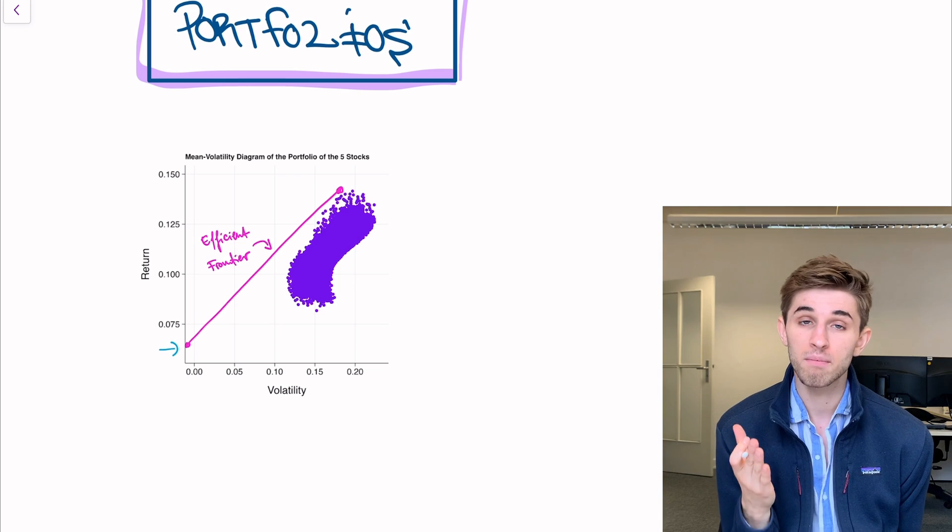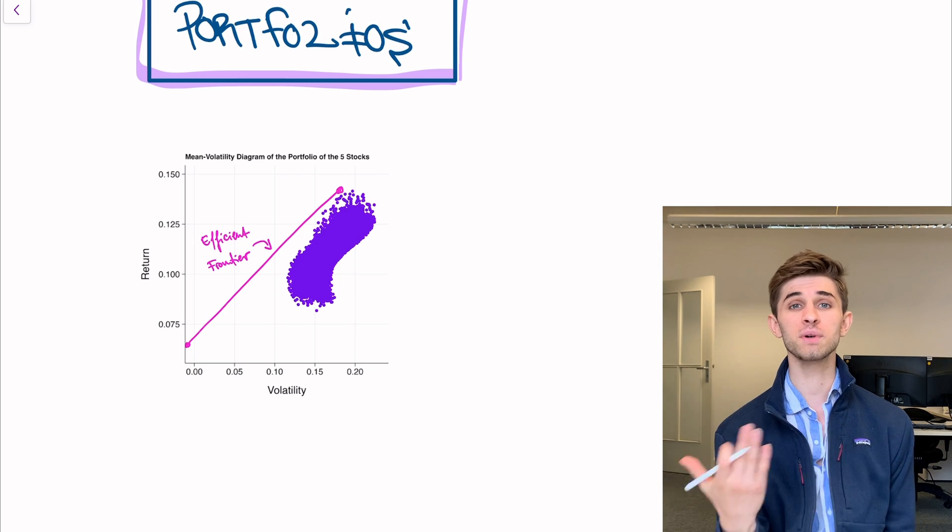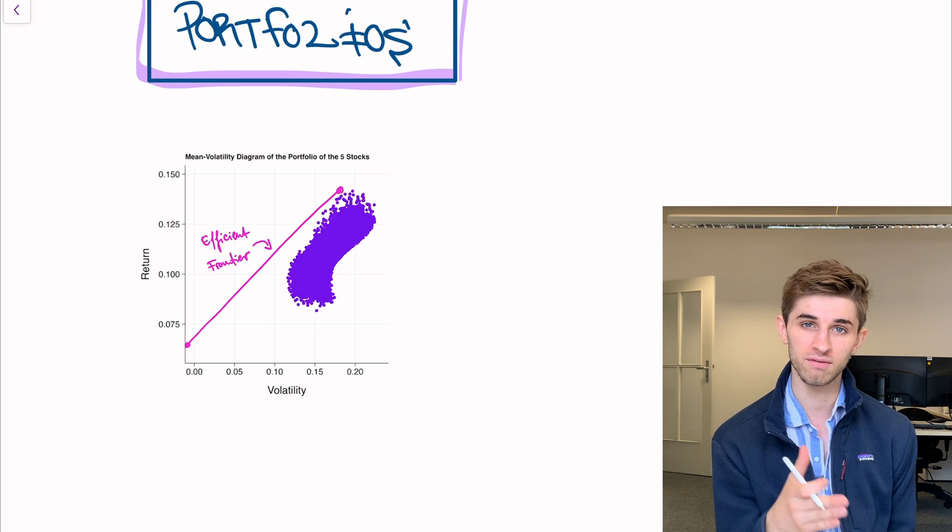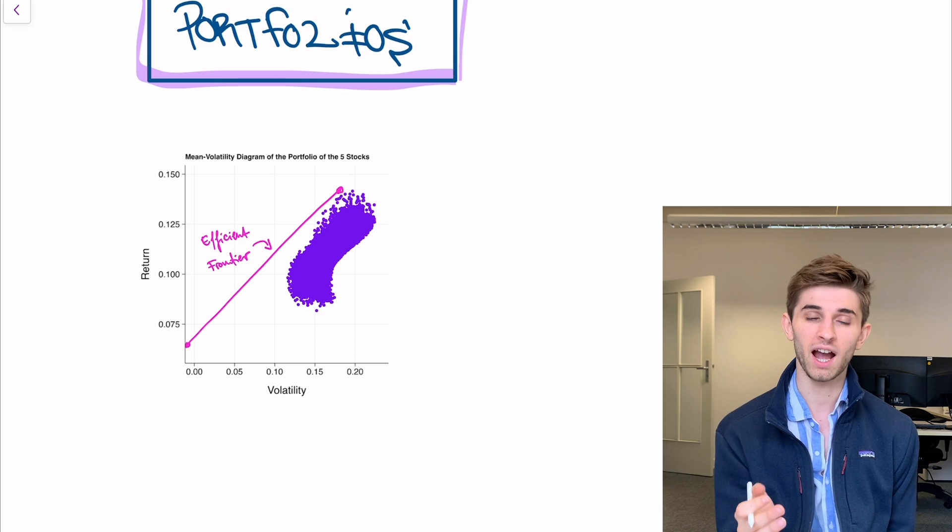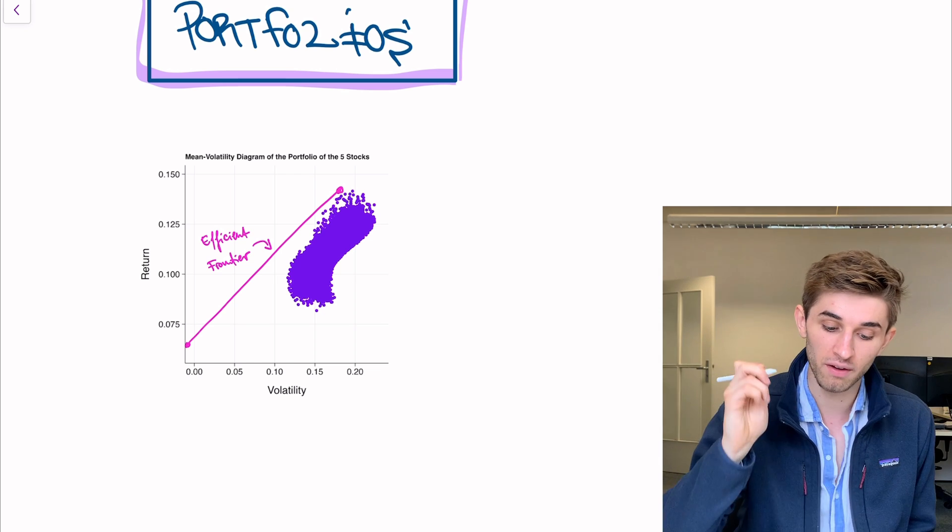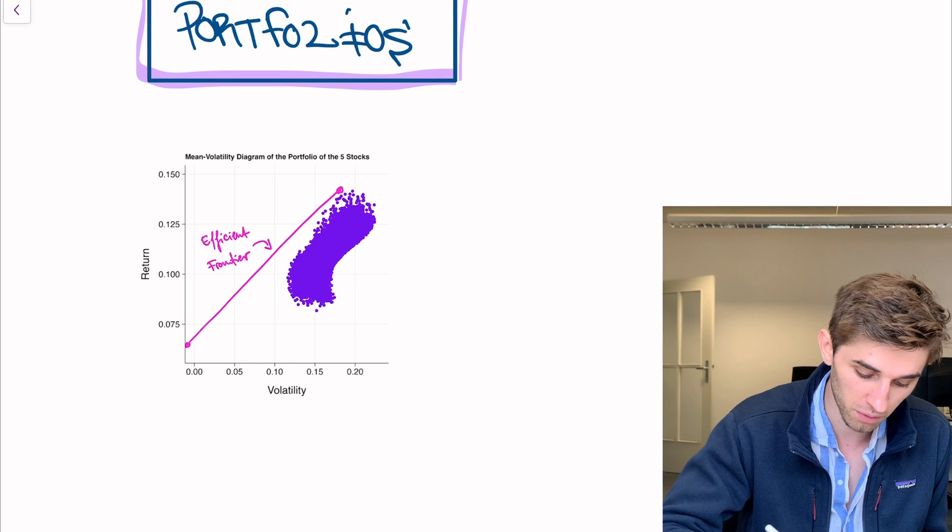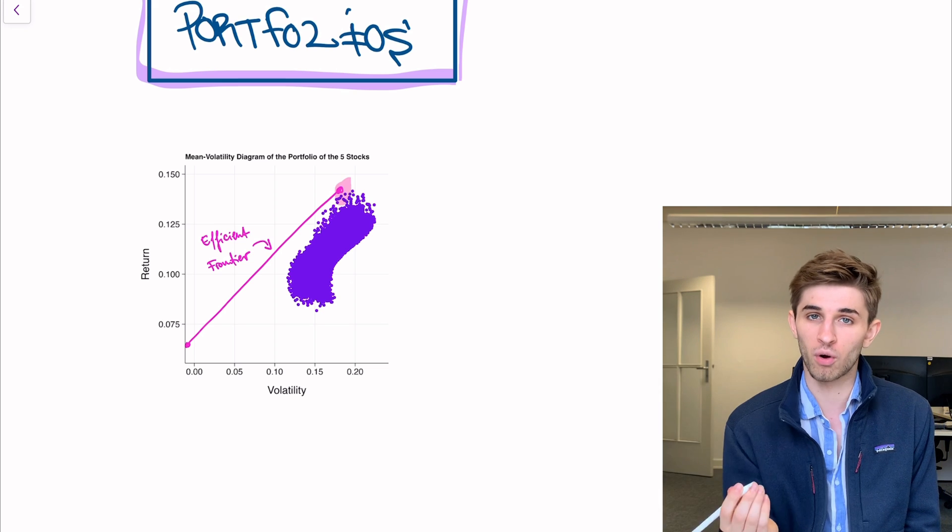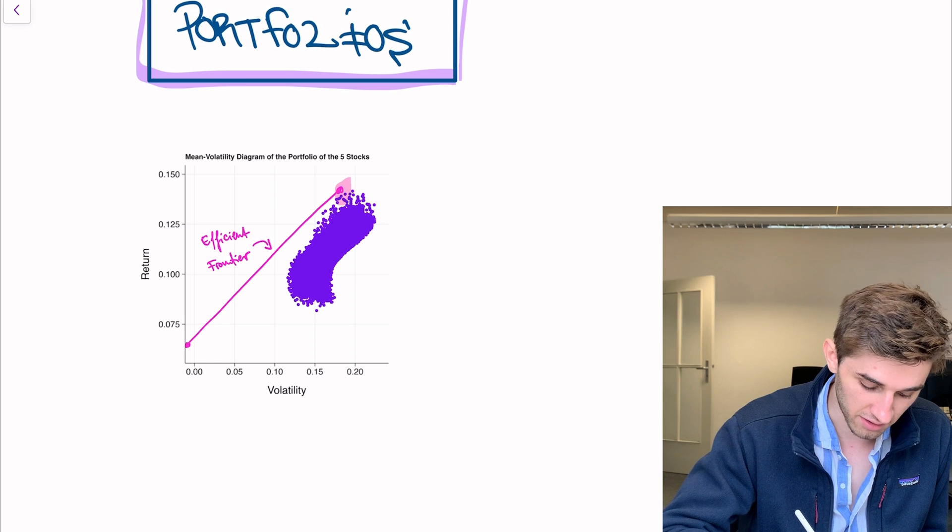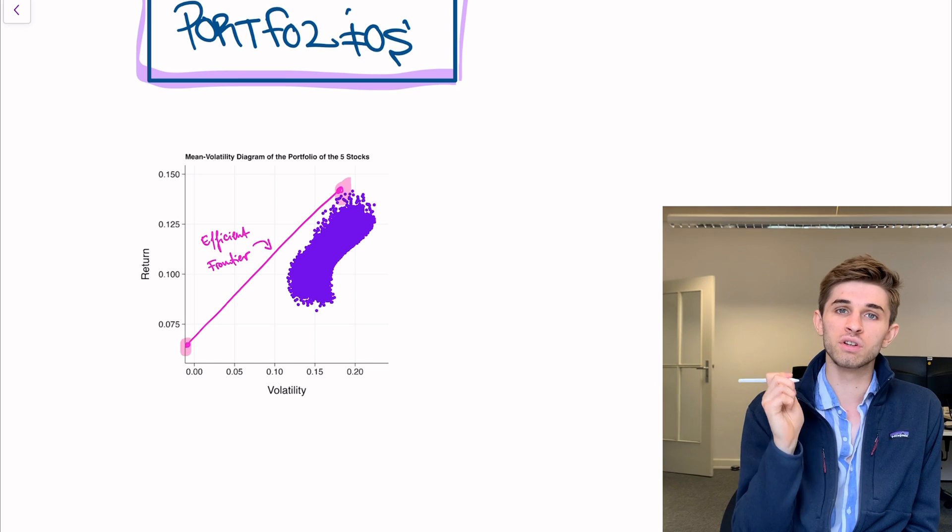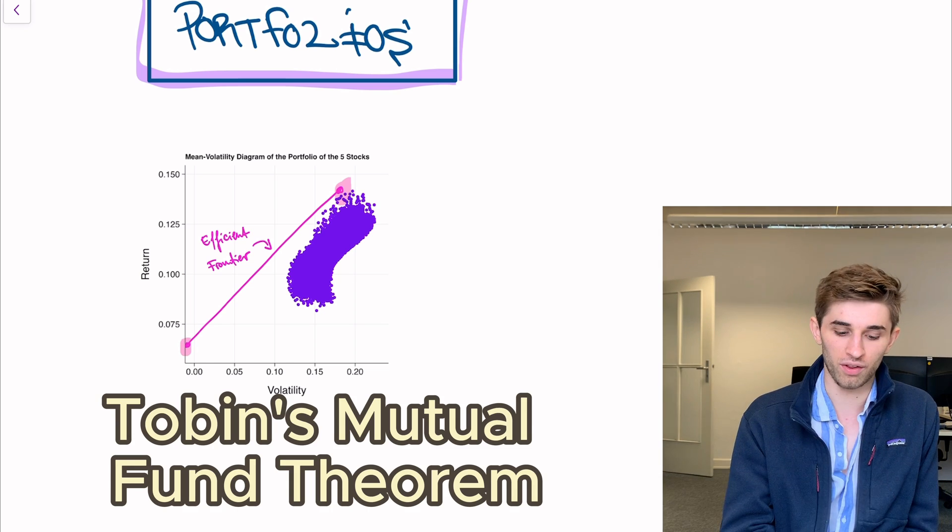And here you see the riskless asset. It's at about 6%. And if we assume that people only care about the mean and volatility of their overall position, then their investment decision will be, I will split my money between the very special tangency portfolio. That's this one. It's the portfolio with the highest mean volatility ratio and the riskless asset. And remember, that's what we called Tobin's mutual fund theory.